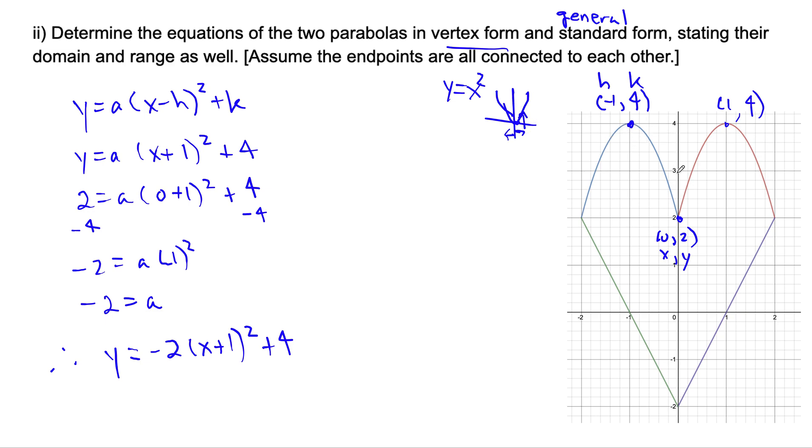But we can also go right one and down two, meaning the stretch had to be 2. And because it's going down, it's -2. So you could easily have determined this number if you make that connection.